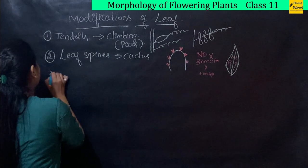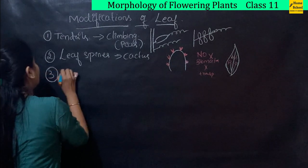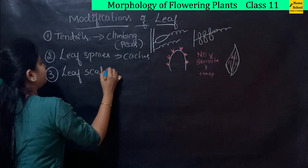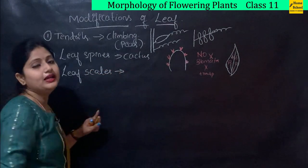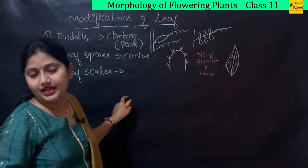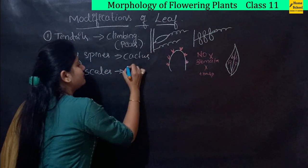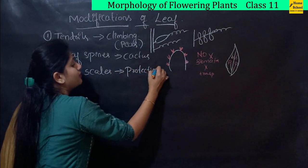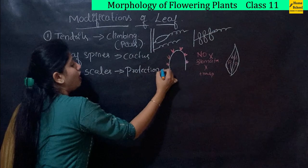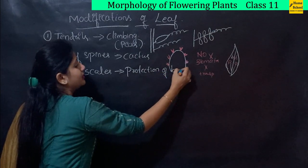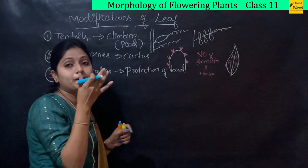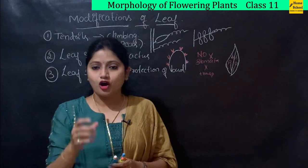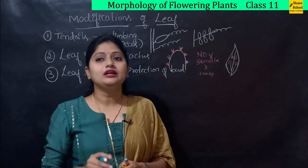The third modification is leaf scales. The function of scales is protection — specifically protection of the bud. The bud is usually formed in the axil of the leaf.